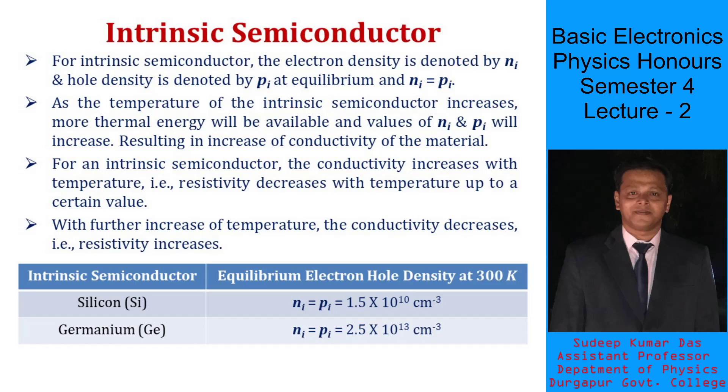For intrinsic semiconductor, the numbers are same, so Ni equals Pi. As we increase the temperature, the conductivity will increase because of the increase in the number density of the charge carriers. But after a certain temperature, the resistivity will start decreasing.